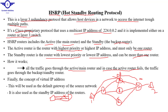Another protocol at the data link layer that implements redundancy is called EtherChannel. Assume we have three links — EtherChannel bundles all these links together to form one logical channel, giving us increased bandwidth and speed.